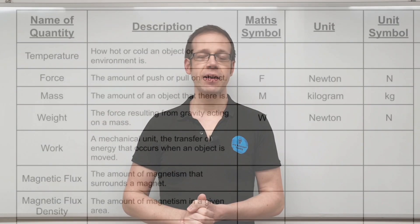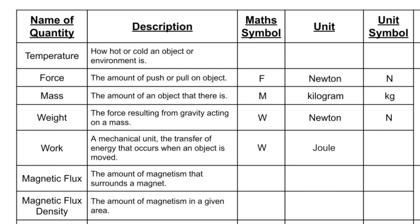Our final SI unit in this video is work, or work done. This is technically the transfer of energy that occurs when an object is moved from one position to another. We use the mathematical symbol W, we use the joule as the SI unit for this, and therefore we use the unit symbol capital J. You'll notice that's the same as energy from a previous video. In that video we were looking at electrical energy; here we're looking at mechanical energy, which is why we call it work or work done. It's measuring the same thing, just expressed differently depending on context.